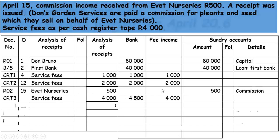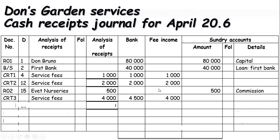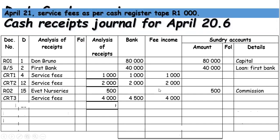Moving on to the next transaction on the 21st of April: service fees as per cash register tape amounting to 1,000 rand. CRT4, date the 21st, service fees — that amount is deposited into the account. This is fee income.